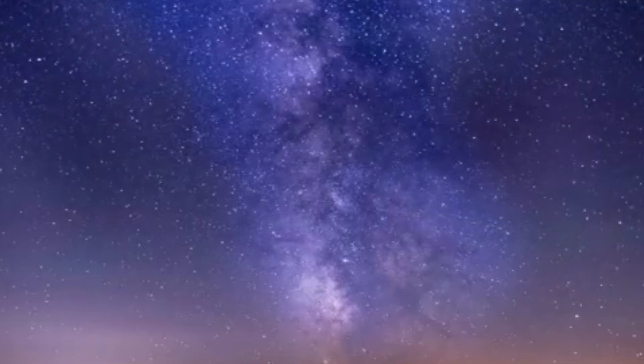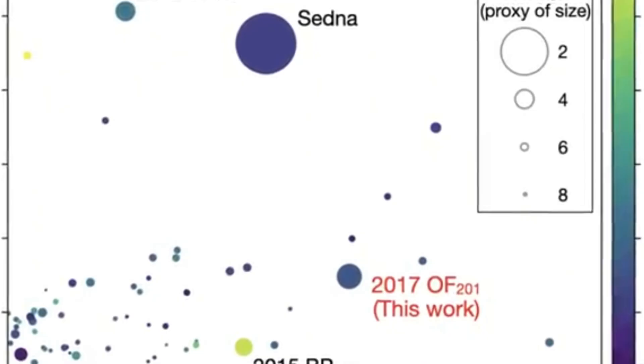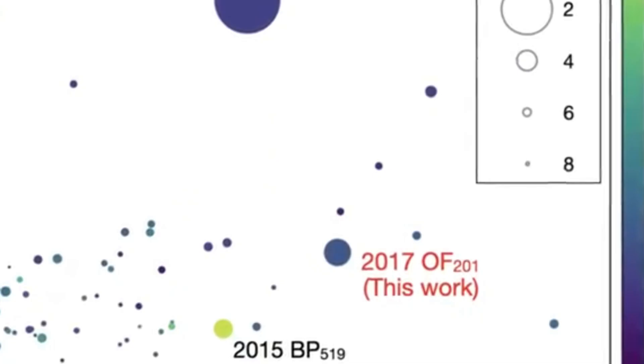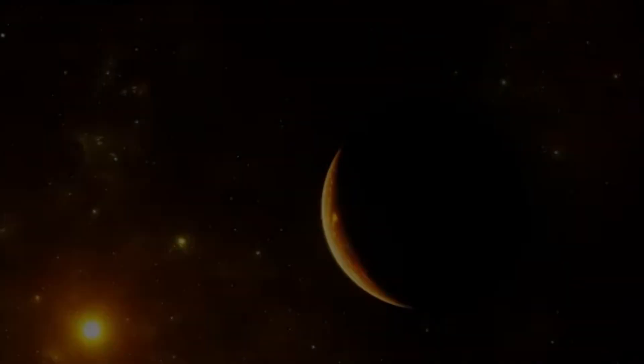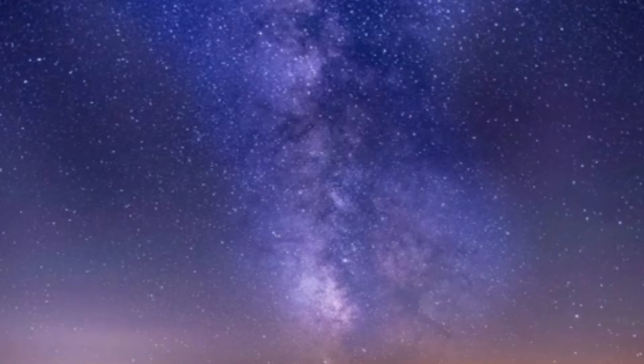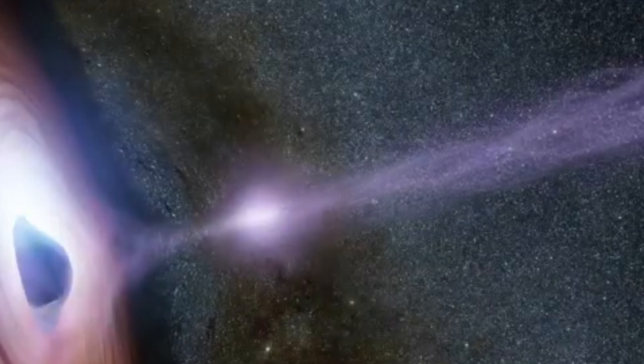Pluto's extraordinary cousin. However, the actual discovery was not even the most exciting part of the story. The celestial body christened 2017 OF201 is also extremely unusual for two reasons.